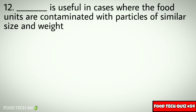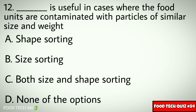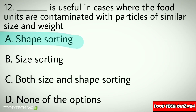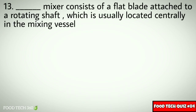Question number 12: Dash is useful in cases where the food units are contaminated with particles of similar size and weight. Options: A. Shape sorting, B. Size sorting, C. Both size and shape sorting, D. None of the options. Correct answer: A. Shape sorting.